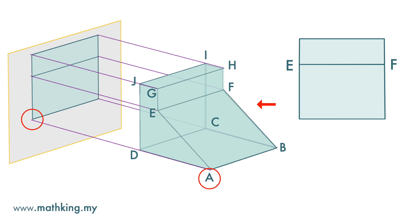So we label here A slash D. And for this vertex, it is B slash C. And for this it is G slash J, and this H slash I.